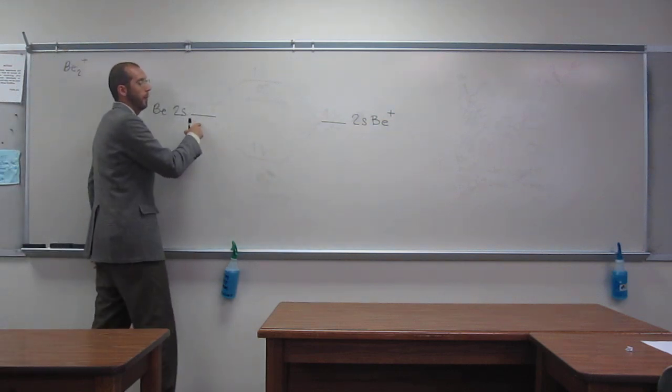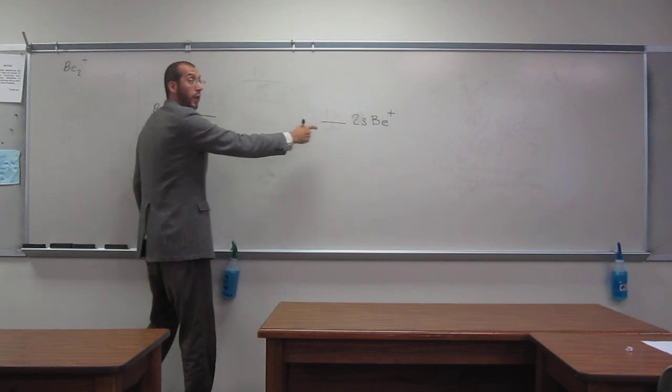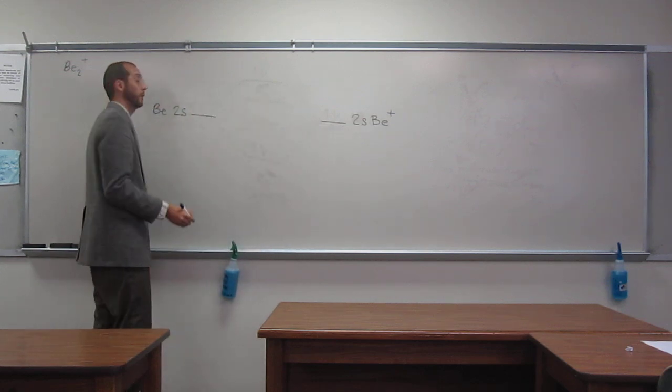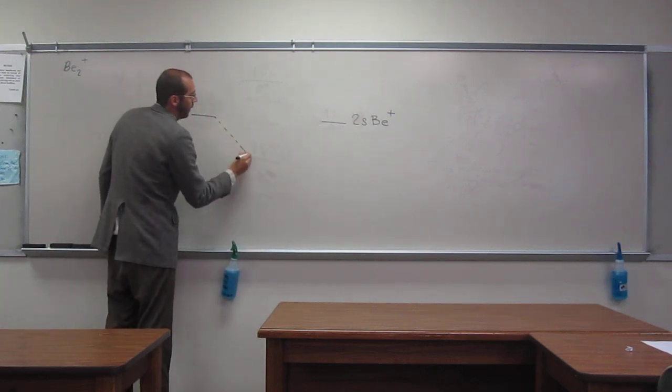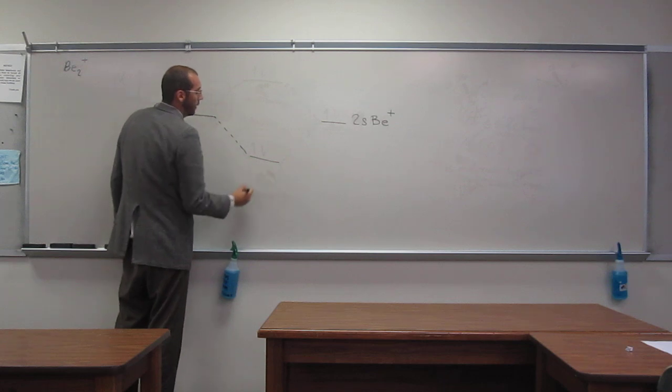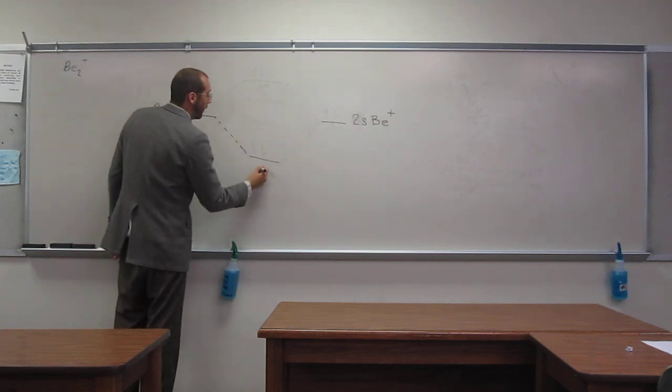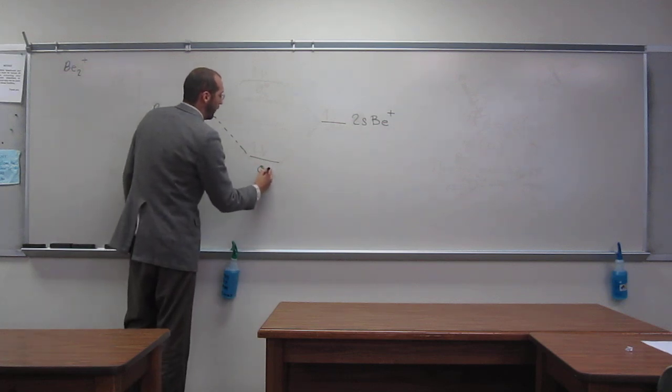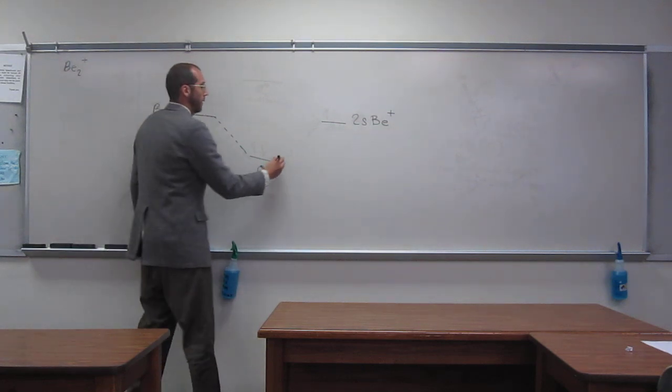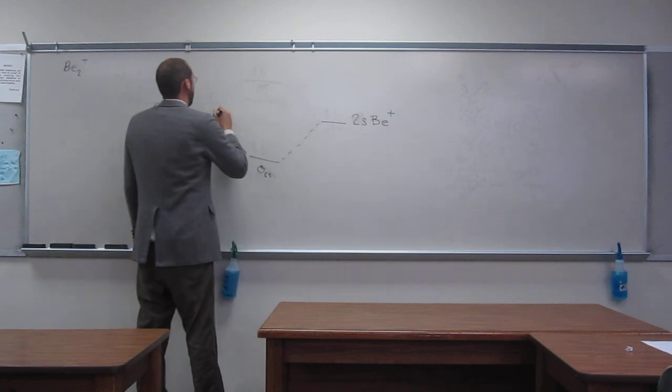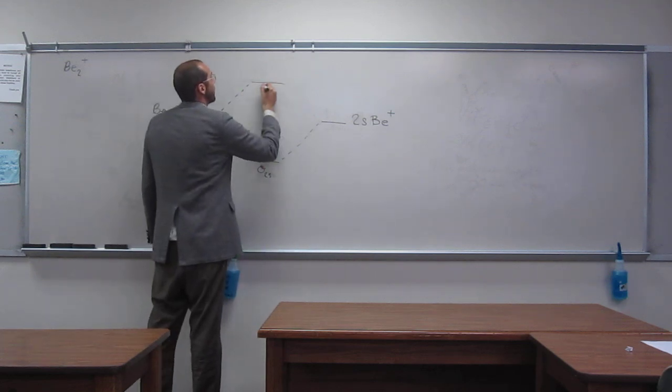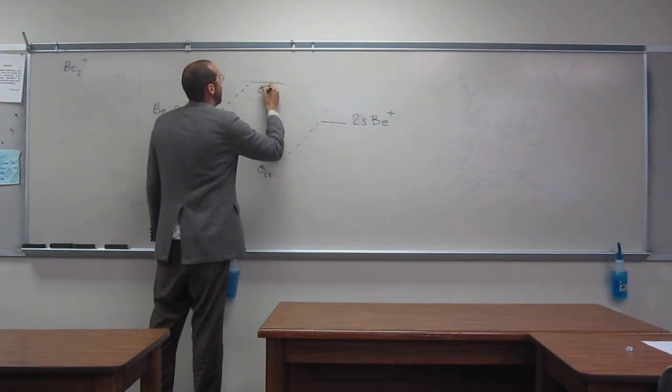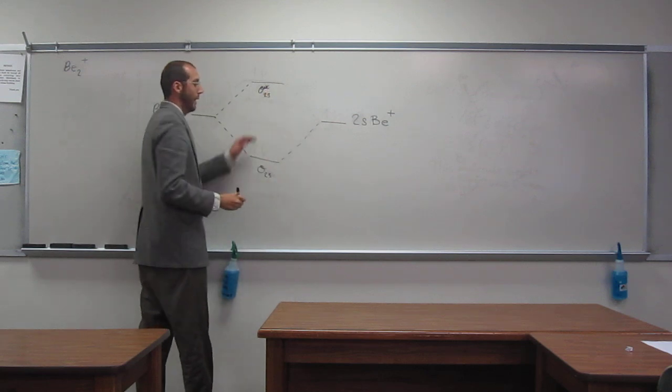So anyways, atomic orbital, atomic orbital, we need to make molecular orbitals. So how do we do that? Well, we're going to make the bonding molecular orbital down here. We call it the, in this case, what do you think we call it? Sigma. Sigma 2s, yeah. And up here, it's going to be the sigma star 2s. That's the antibonding.